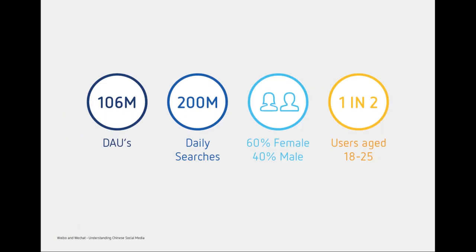Weibo is quite often referred to as the Chinese Twitter. It has about 100 million daily active users and about 200 million searches each day — similar to Twitter, where you can search to see what people are talking about and join topic conversations. Demographically, it's a slightly female-oriented market and a younger demographic, with 50% of the audience being between 18 and 25, which isn't too surprising given the nature of social media's uptake in China.